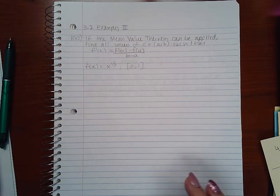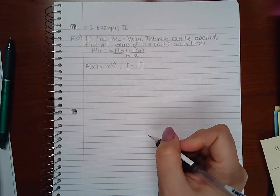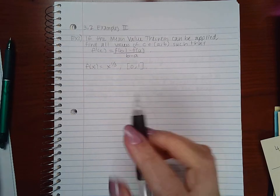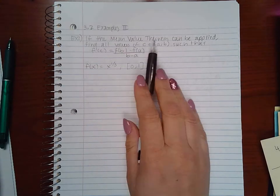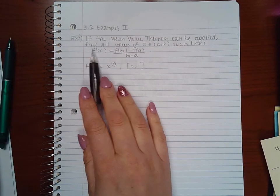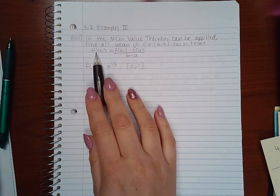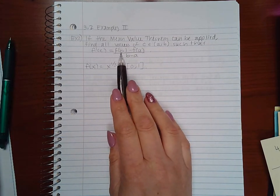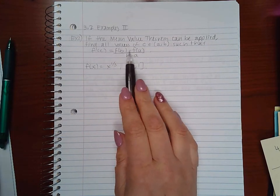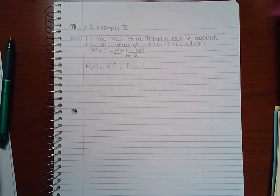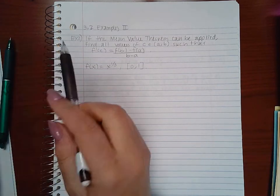Okay, this is 3.2 examples part 2. It says if the Mean Value Theorem can be applied, find all values of c in (a,b) such that f'(c) equals f(b) minus f(a) over b minus a. Remember for the theorem...